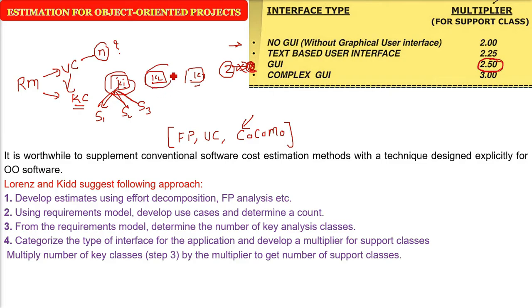Now you have the key classes and the support classes. Classes are the basic size estimation for object-oriented projects. For each analysis class category, multiply: if it is no GUI, multiply by 2; for text-based user interface, multiply by 2.5, and so on.